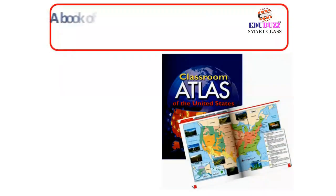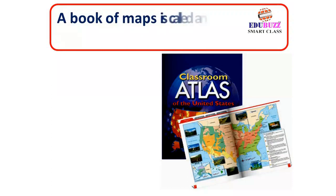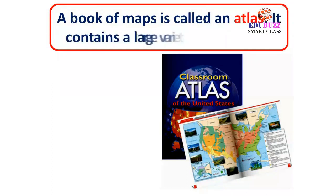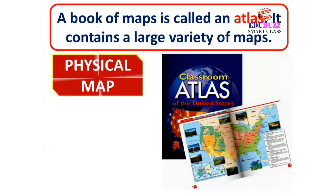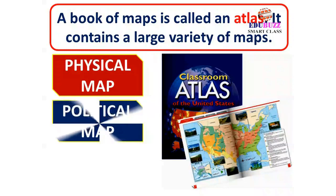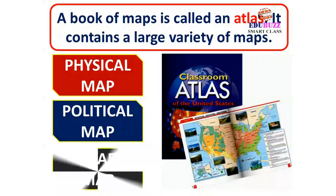A book of maps is called an atlas. It contains a large variety of maps: physical map, political map and road map.